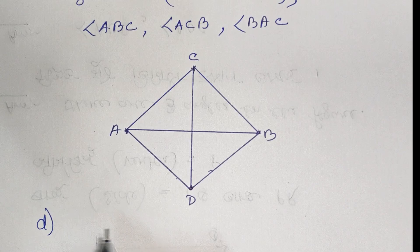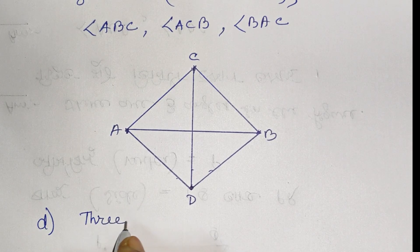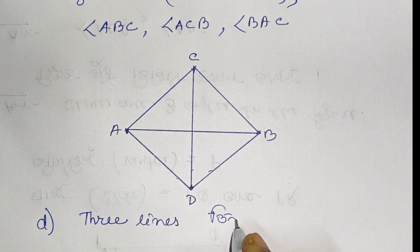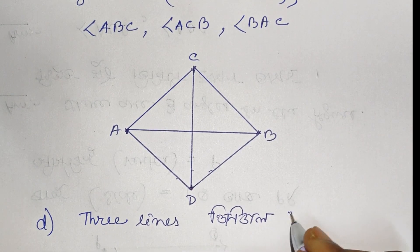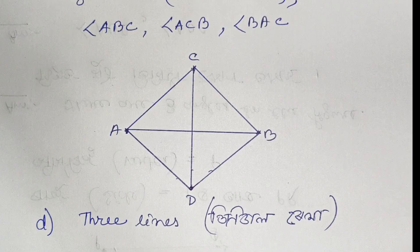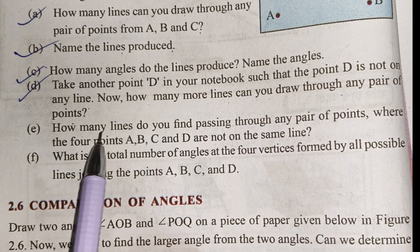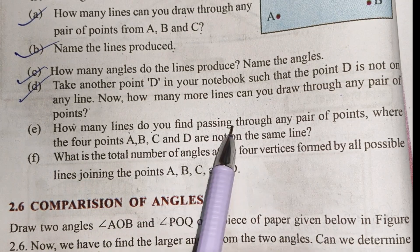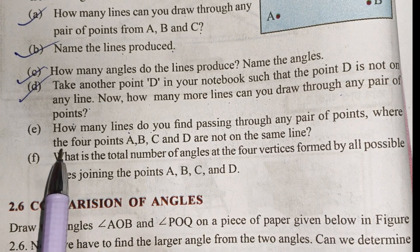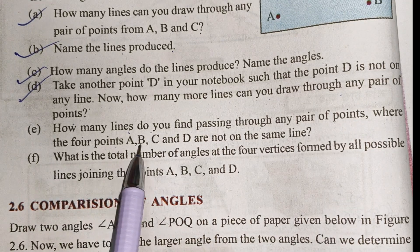How many lines do you find passing through any pair of points where the four points A, B, C, and D are not on the same line?